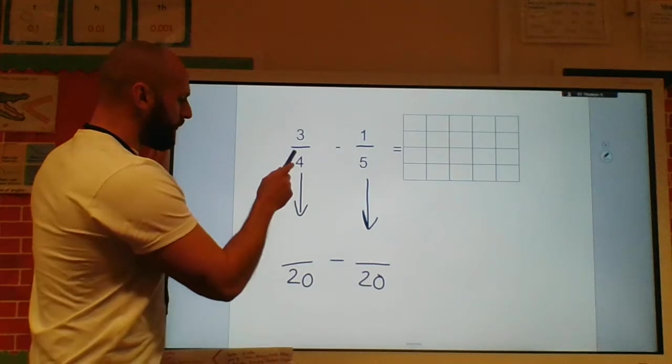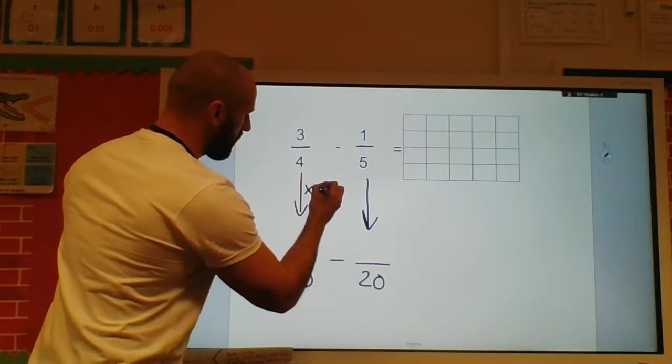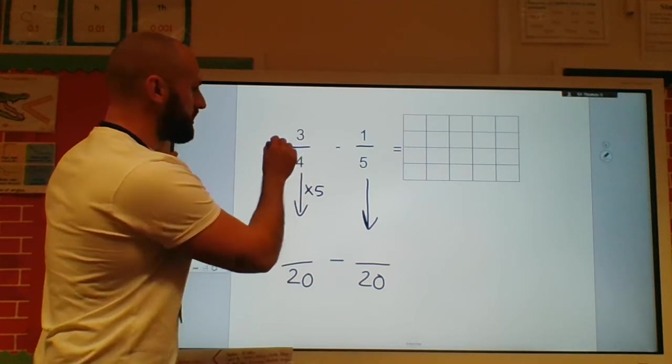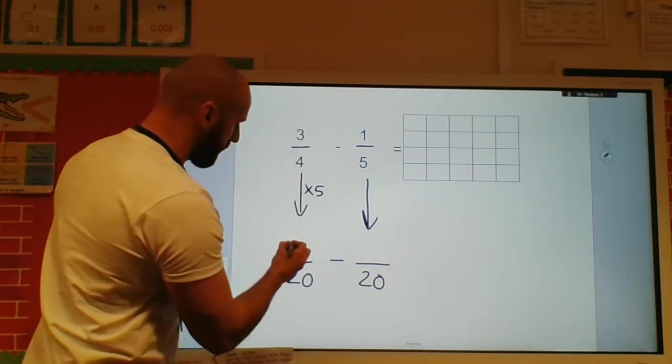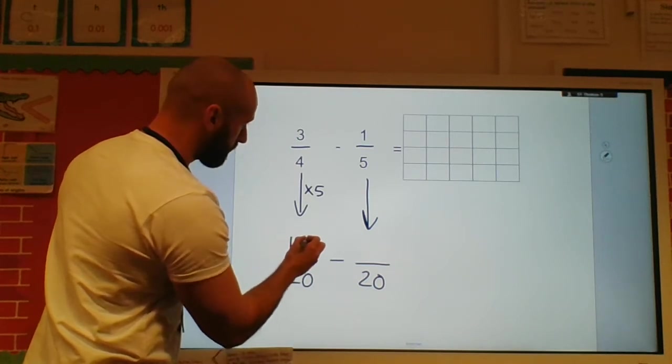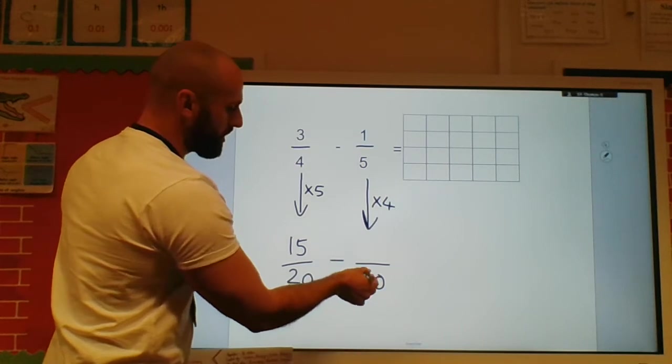And I think again, four times what equals twenty? Well it's five. So whatever I do to the denominator, I must also do to the numerator. Three times five is fifteen.